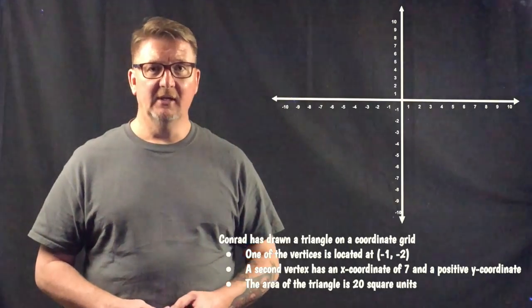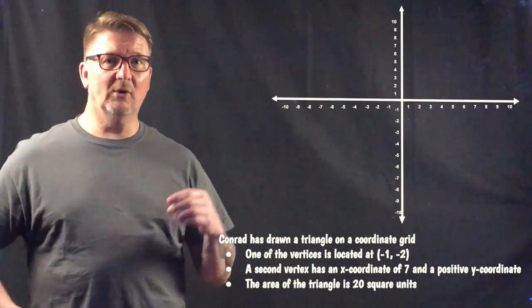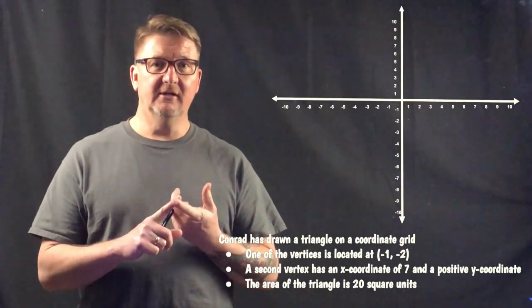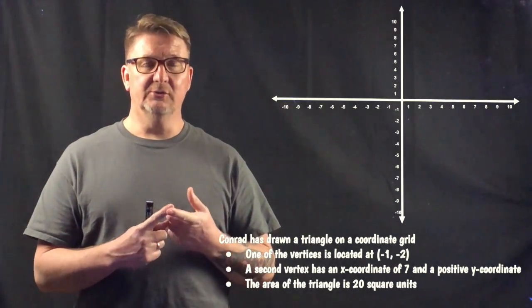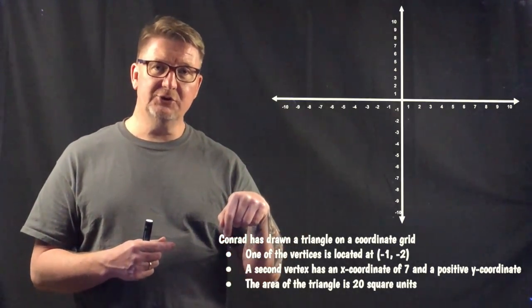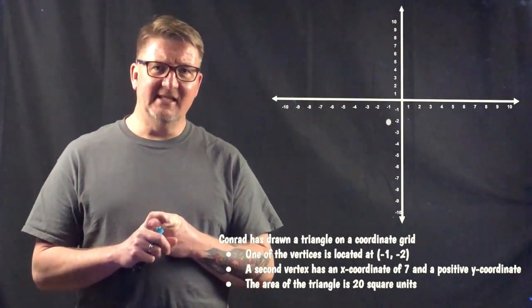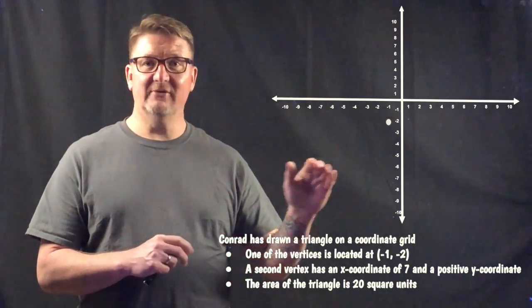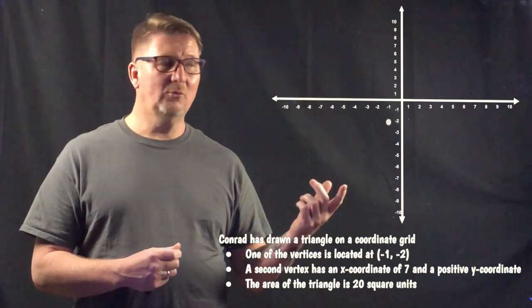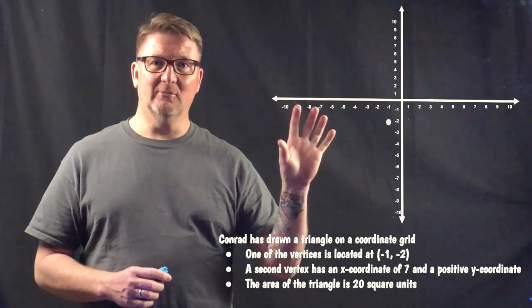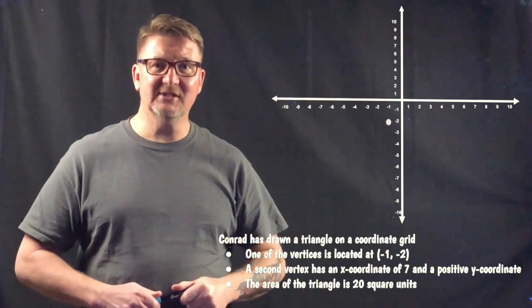For the next example, we have Conrad. He's drawn a triangle on a coordinate plane. A triangle is a three-sided figure. One point is located at (-1, -2), so we go to the left one place and down two places — that's where the first point goes. The next thing we know is that the triangle has a point at x = 7 on the x-axis and that its y-coordinate is positive, so it's got to be up in quadrant 1 somewhere.